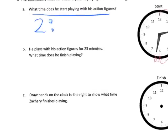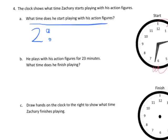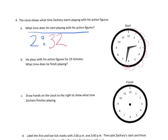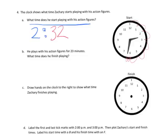So our time is going to be 2 o'clock plus 32 extra minutes. Question B says: he plays with his action figures for 23 minutes — what time does he stop, what time does he finish playing? So the idea would be we have to start at 2:32 and then travel 23 more minutes.